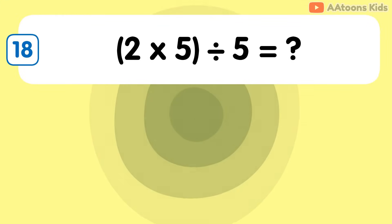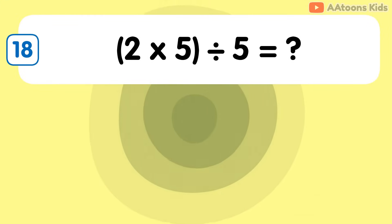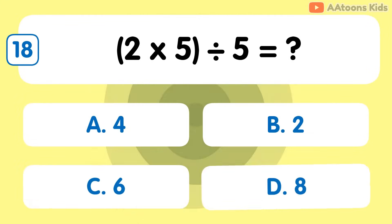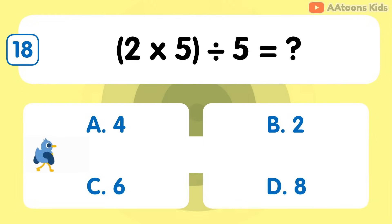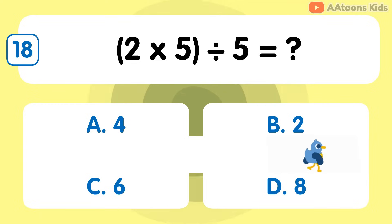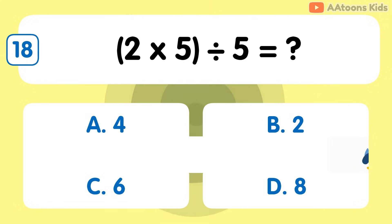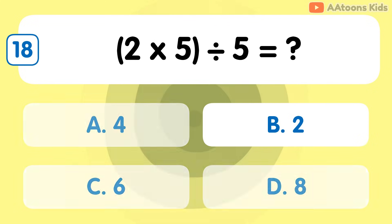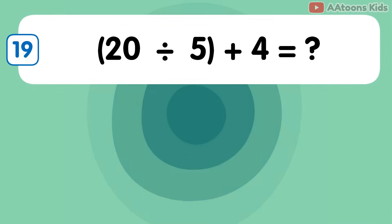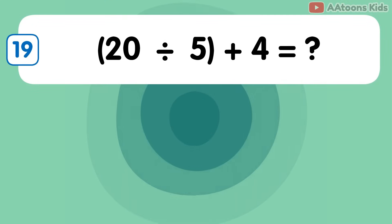2 multiplied by 5 divided by 5 is 2. 20 divided by 5 plus 4 is 8.